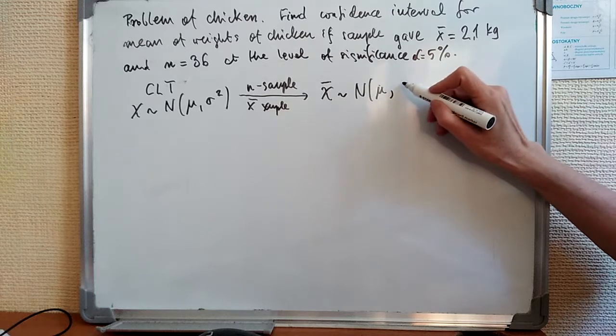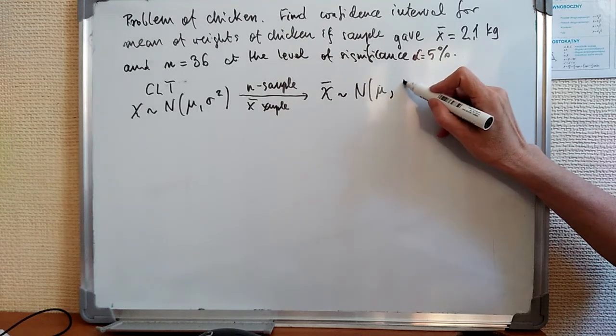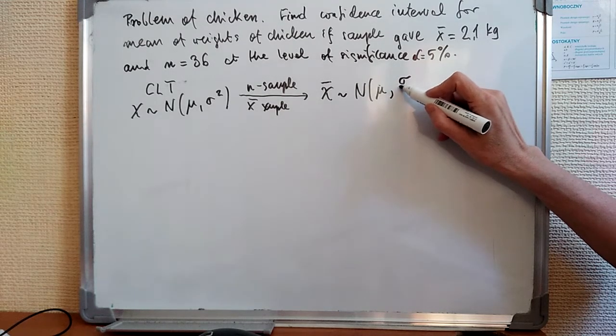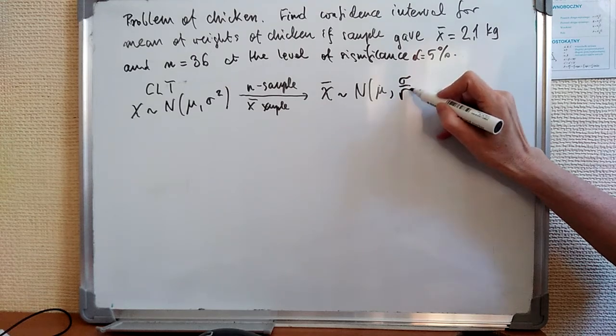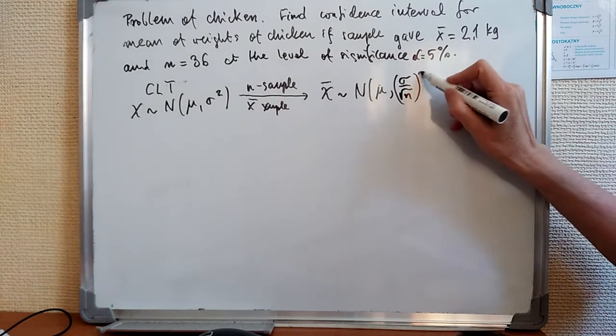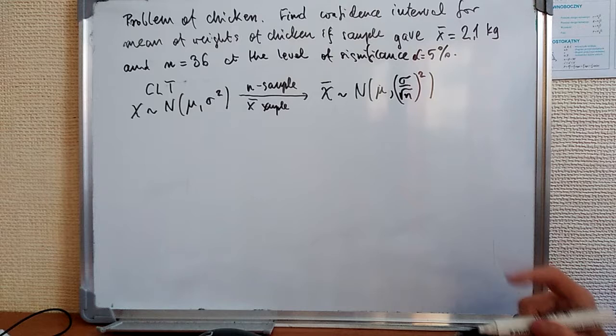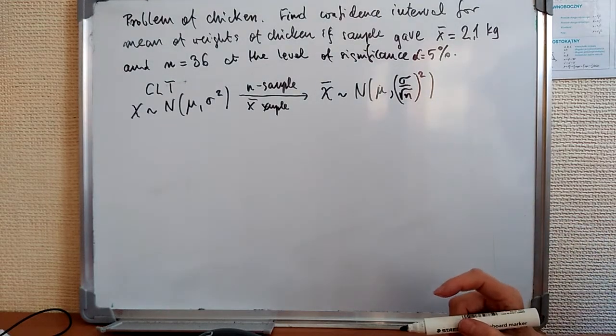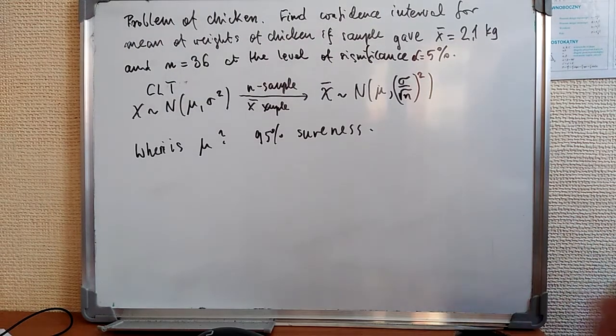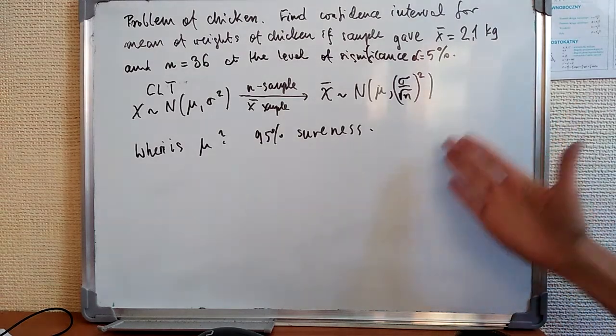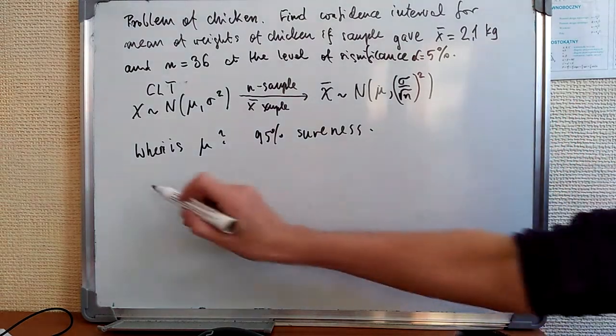The distribution of the sample mean is also normal with parameters mu, the same parameter as here. And the variance changes a little bit. The variance becomes sigma divided by square root of n, and this is squared. So that's the new variance. We've been showing why.